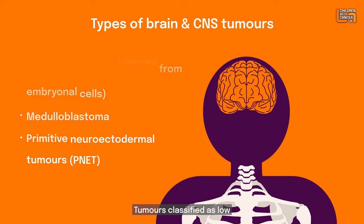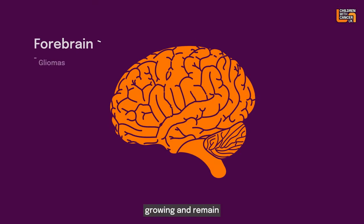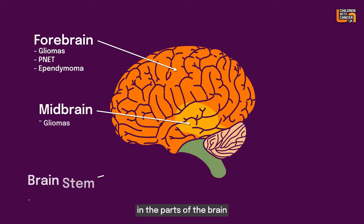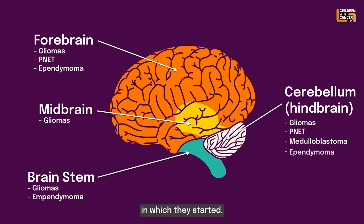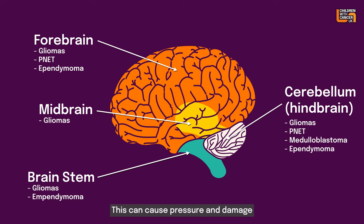Tumours classified as low grade are very slow growing and remain in the part of the brain in which they started. High grade brain tumours are likely to be more aggressive in spreading to the brain tissue which surrounds them. This can cause pressure and damage to the surrounding areas.